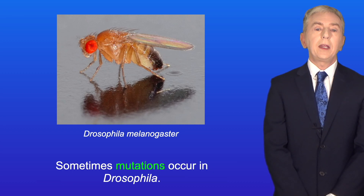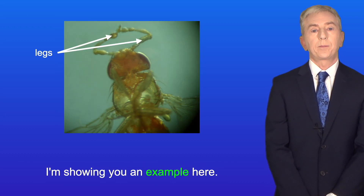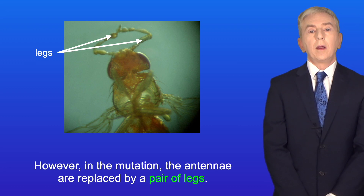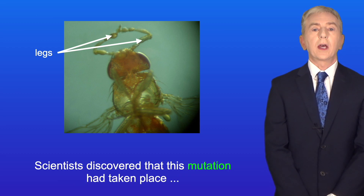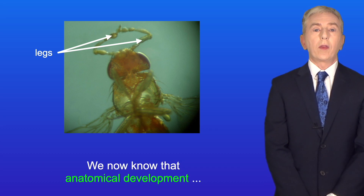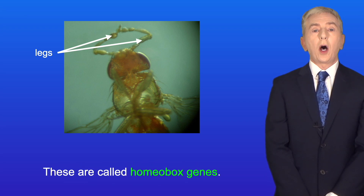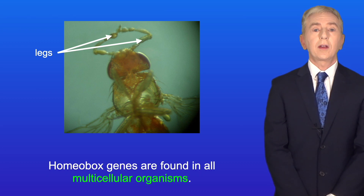Sometimes mutations occur in Drosophila, and some of these mutations produce changes to the anatomy of the fruit fly. In the wild-type fruit fly, there's a pair of antennae on the head. However, in the mutation, the antennae are replaced by a pair of legs. Scientists discovered that this mutation had taken place in a gene controlling anatomical development, and we now know that anatomical development is actually controlled by a group of genes called homeobox genes. Homeobox genes are found in all multicellular organisms.